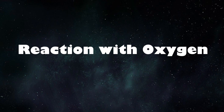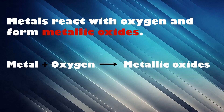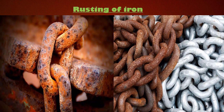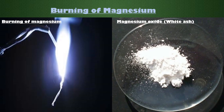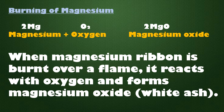Reaction with oxygen: Metals react with oxygen and form metallic oxides. For example, rusting of iron is the result of the reaction of iron, which is a metal, with oxygen-containing moisture. Burning of magnesium is also an example — when magnesium ribbon is burned over a flame, it reacts with oxygen and forms magnesium oxide.